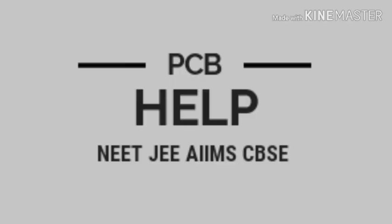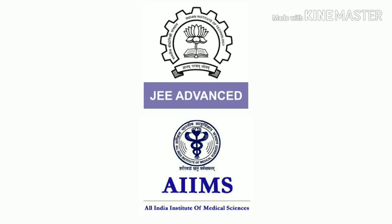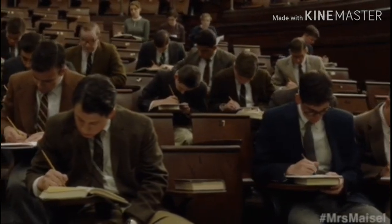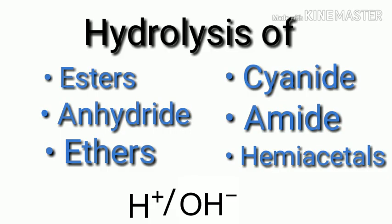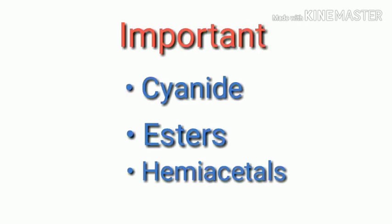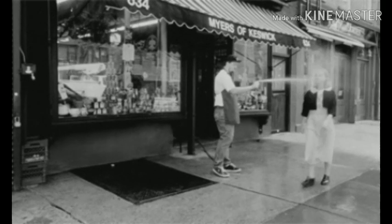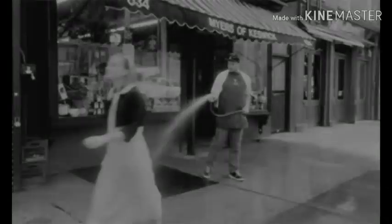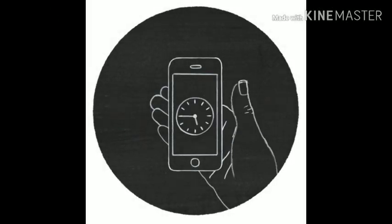Namaste friends, welcome back to my YouTube channel PCB Help. As the AIMS date is going to increase, students are going to increase the tension. For this, PCB Help brings you hydrolysis of esters, anhydrides, ethers, cyanides, amides, and hemiacetals in acidic and basic medium. Hydrolysis of cyanides, esters, and hemiacetals are very important. After this video you will solve all the problems. Let's get started.